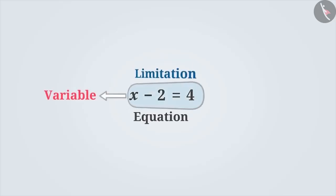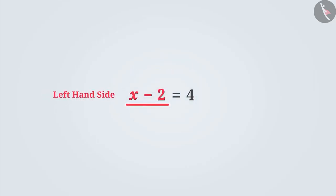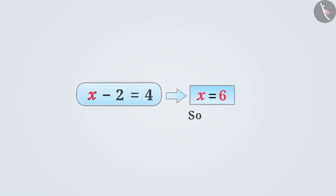So far, we have known that there is a restriction on an equation with a variable. Its left-hand side and right-hand side have equal values which are expressed by the sign of equivalence, i.e., the equal sign. Each equation has only one solution that satisfies the equation.